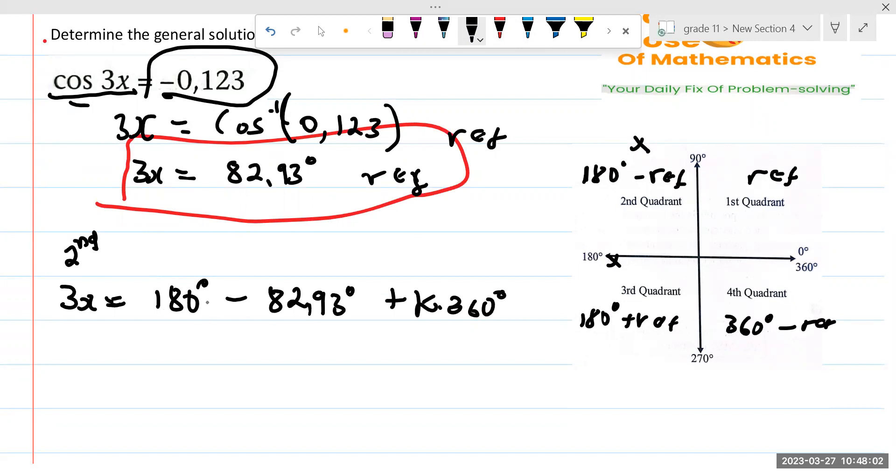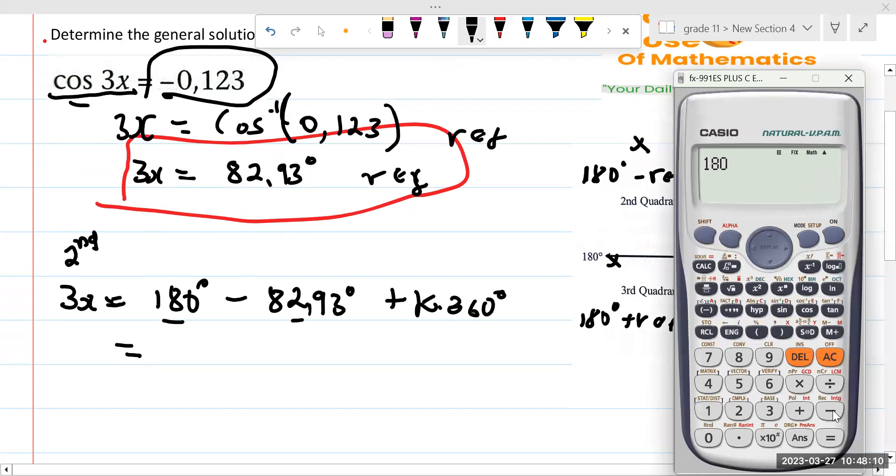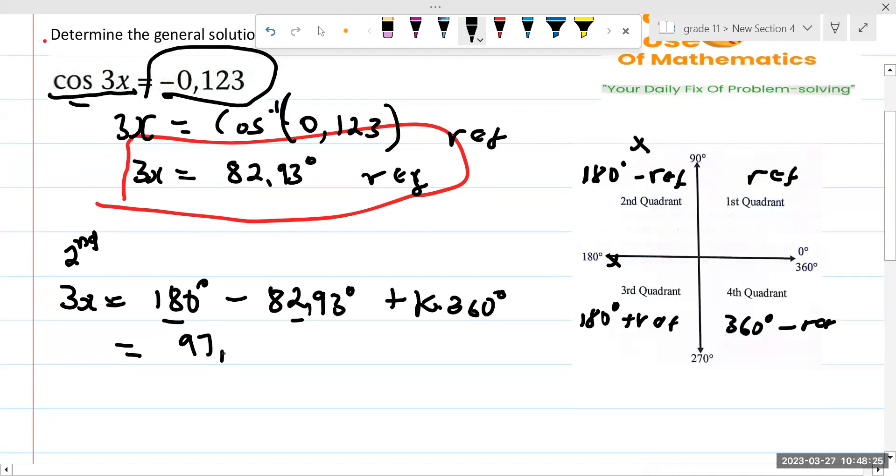Now, if I were to simplify this because I want to make x the subject of the formula, I'm going to say, okay, this one and this one. If I say 180 degrees minus our answer, 180 degrees minus 82.93, it says we have 97.07 plus K multiplied by 360 degrees. This is equal to 3x, still not equal to x. I want x, okay?